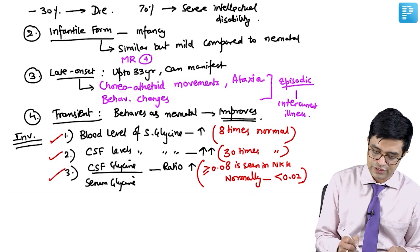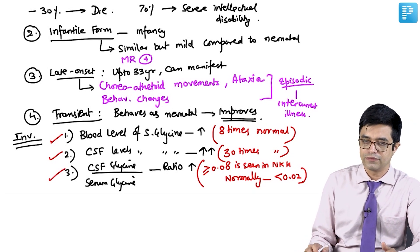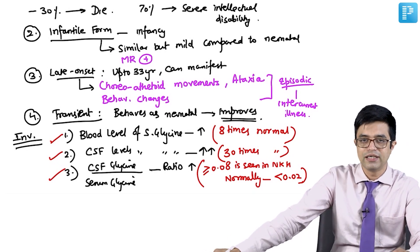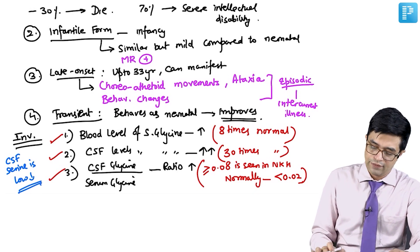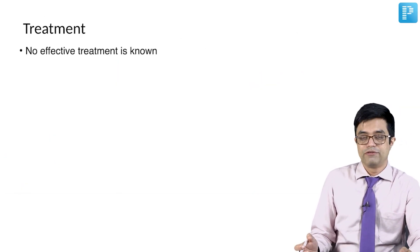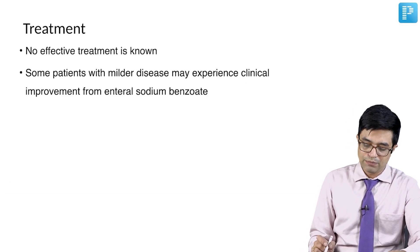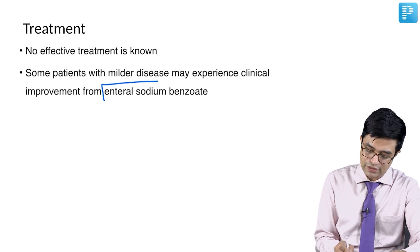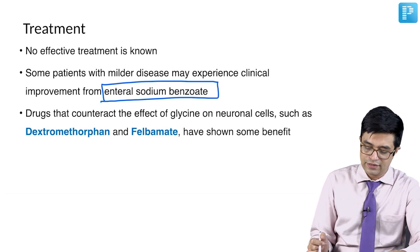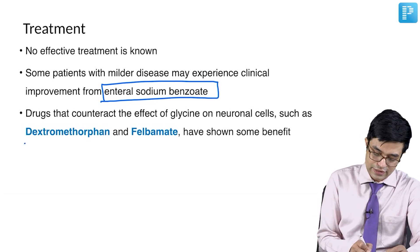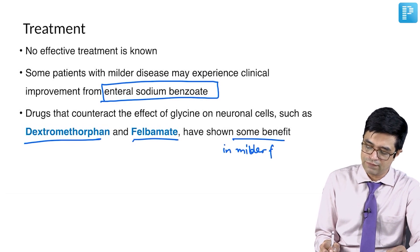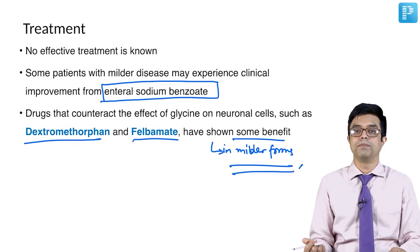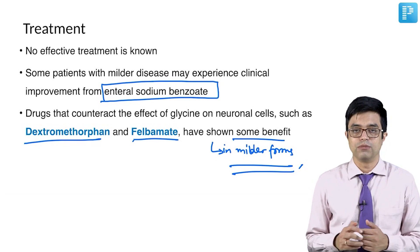Additionally, CSF serine levels are found to be low. Regarding therapy, no effective treatment is unfortunately known. Some patients with mild disease may experience improvement with enteral sodium benzoate, and drugs that counteract the effect of glycine at neuroreceptors — such as dextromethorphan and felbamate — have shown some benefit in milder forms. Unfortunately, this disease still does not have a very good outcome. This concludes the glycine metabolism defect discussion.